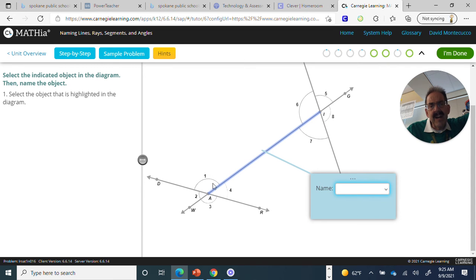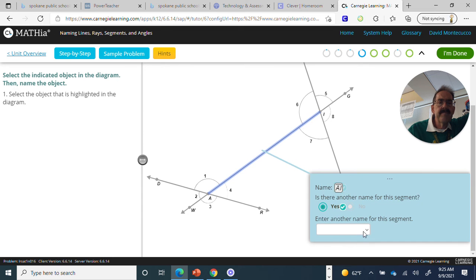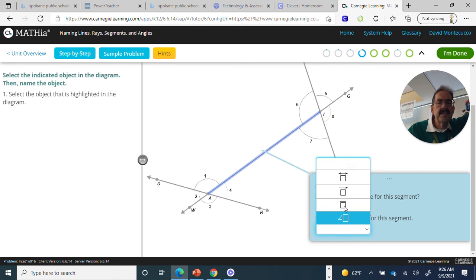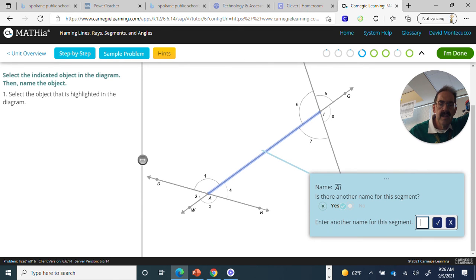So this is a segment. AGH... I think that's an I. I'm going to try AI. Segment AI. Is there another name? Yes. IA. Segment. So the line, IA, no arrows.